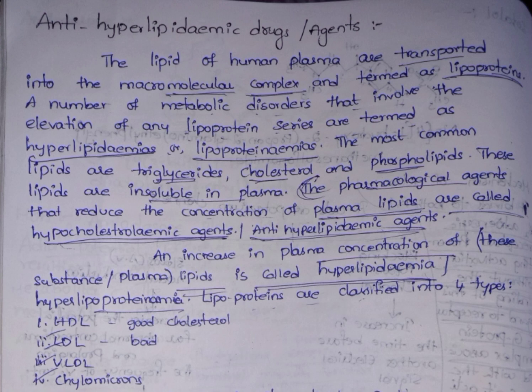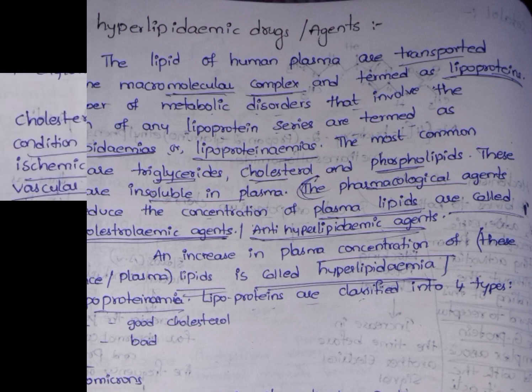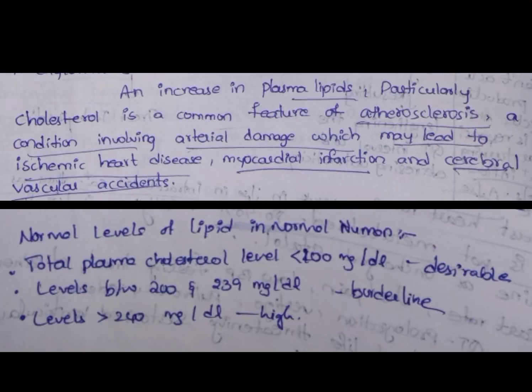There are four types of lipoproteins in human plasma: HDL (high-density lipoproteins), LDL (low-density lipoproteins), VLDL (very low-density lipoproteins), and chylomicrons. An increase in these plasma lipids may lead to some heart diseases, one among them being atherosclerosis. Have a look at the normal levels of lipids in the human body.